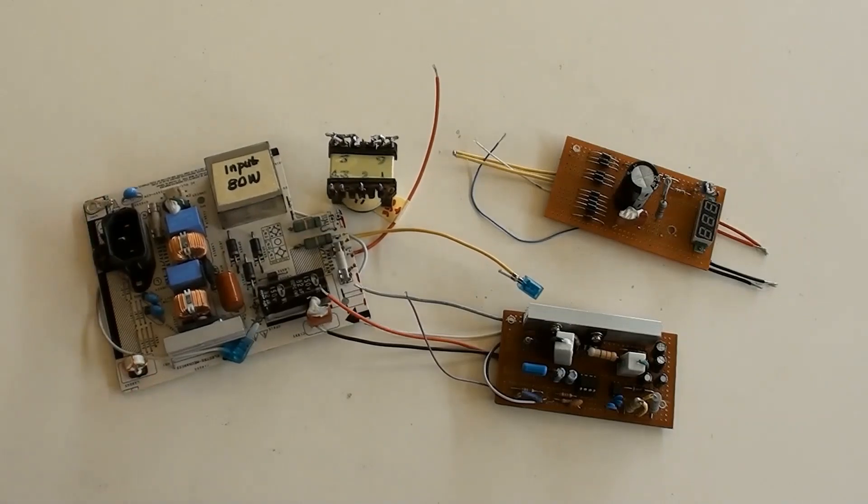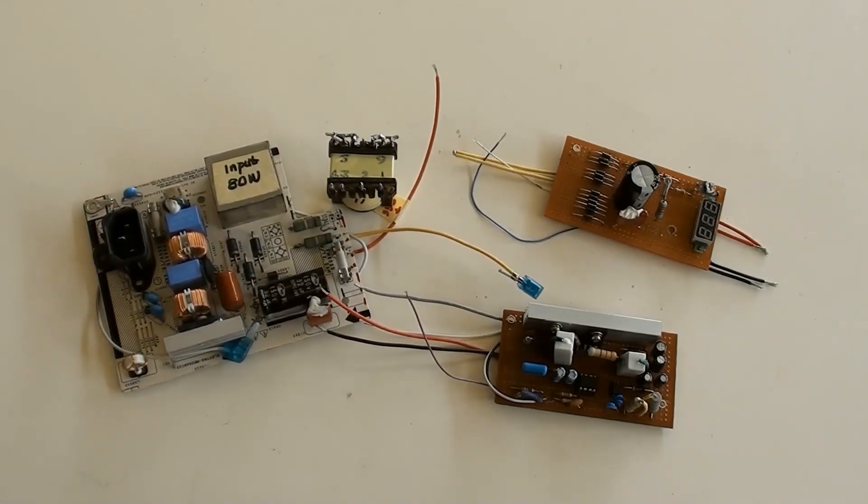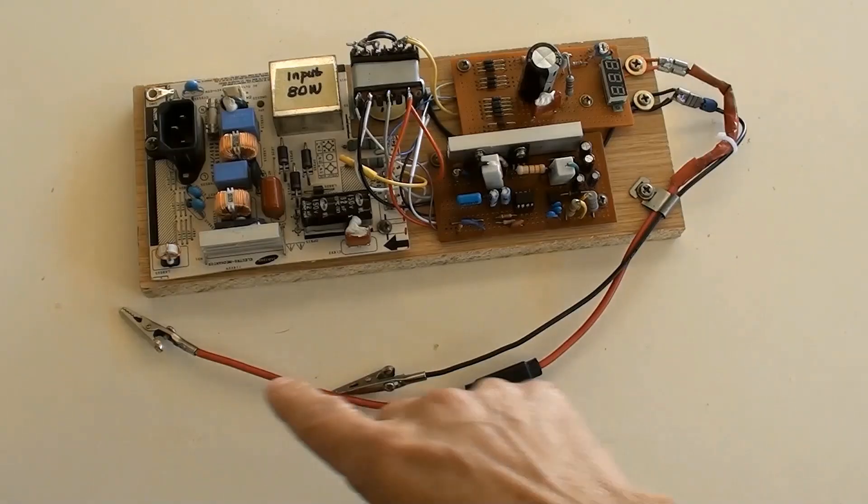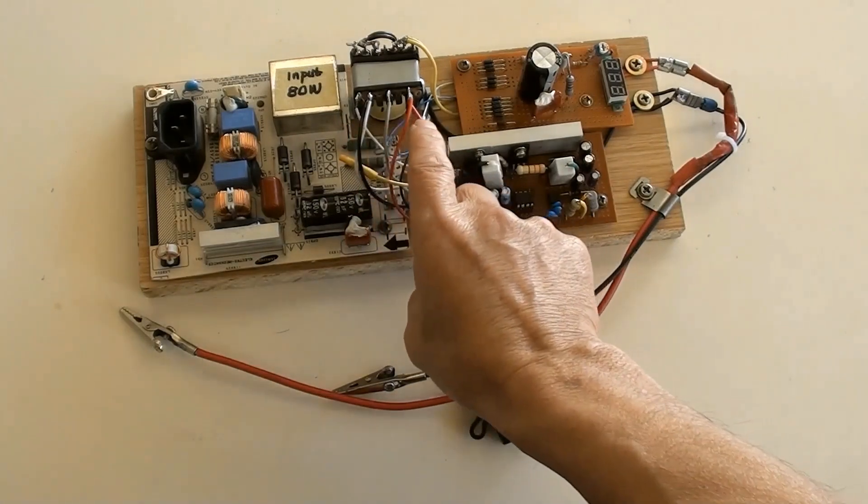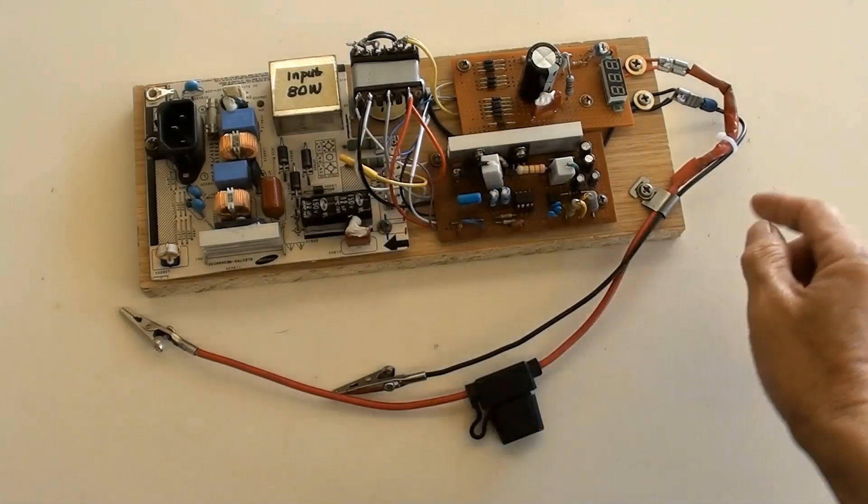Next step is to connect all the necessary wires. Now all wires have been connected and the circuit boards secured on a piece of board.